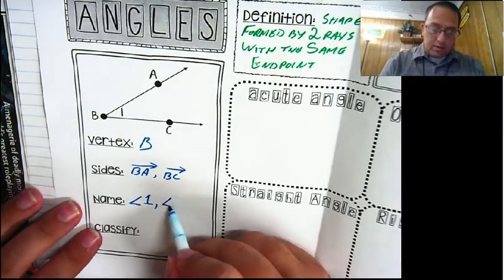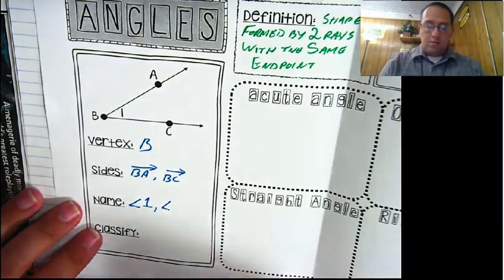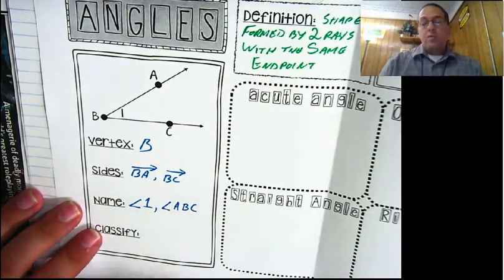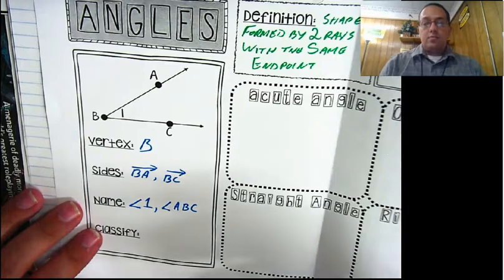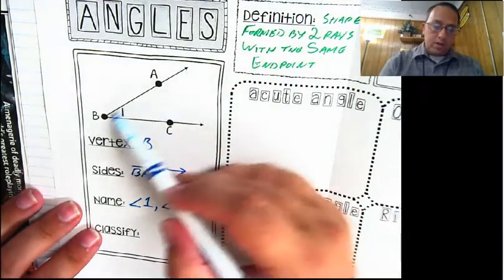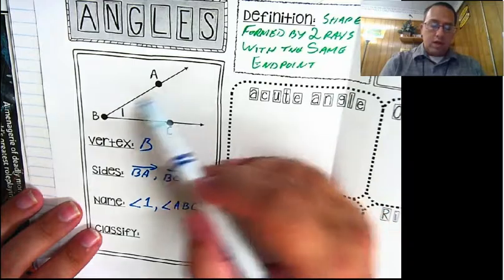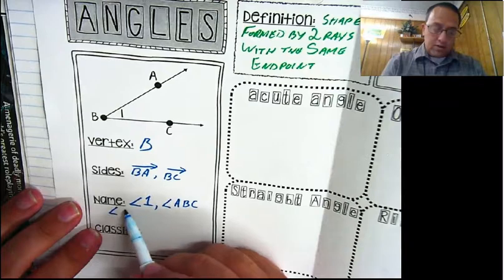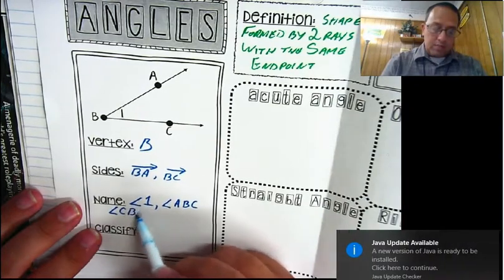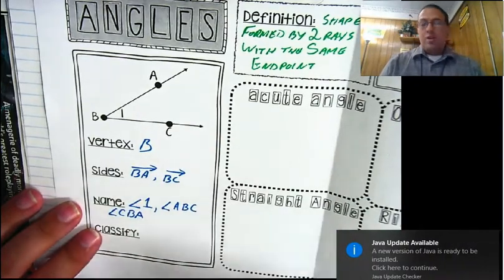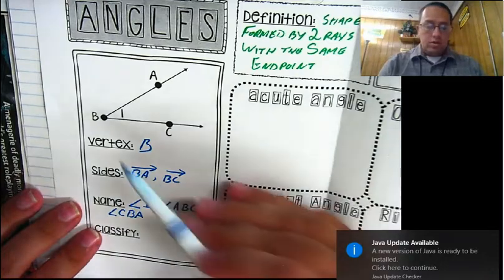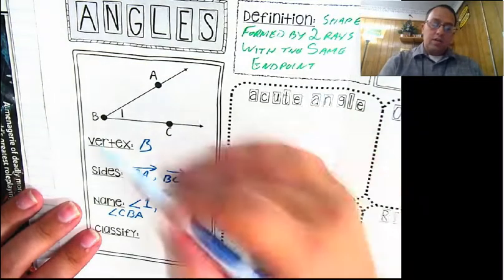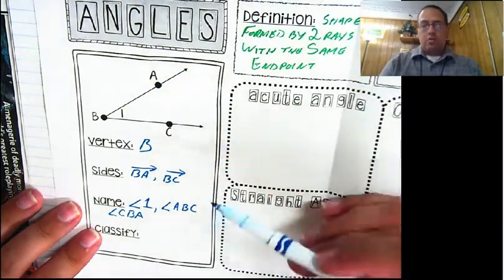Another thing we could name this: angle ABC. This is very much like when we named polygons in the previous video - you start at one point and go around the angle. So ABC, or we could just as easily call it CBA. What you cannot do is call this angle BAC. You can go around the lake in either direction you want, but you can't jump across the lake.